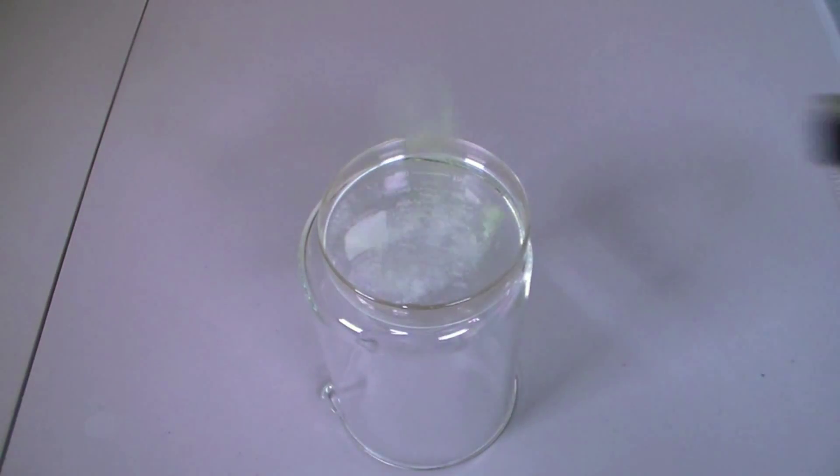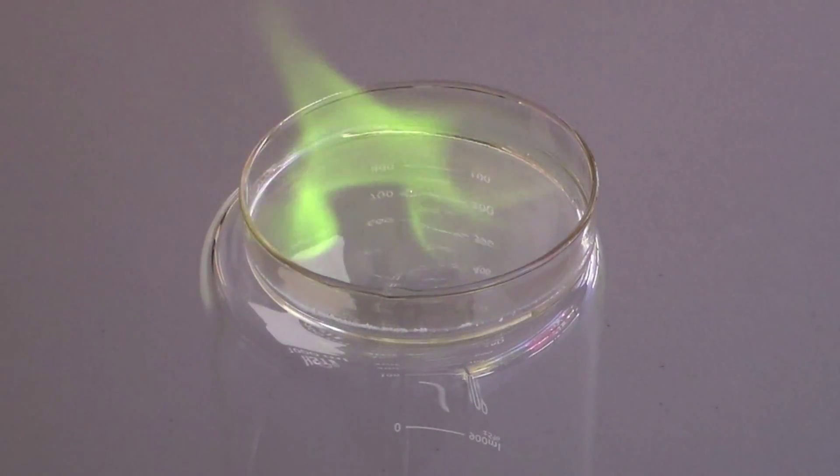When you are ready, light the methanol with a torch. You can see the beautiful green color of the flame due to the boron atoms in the boric acid.